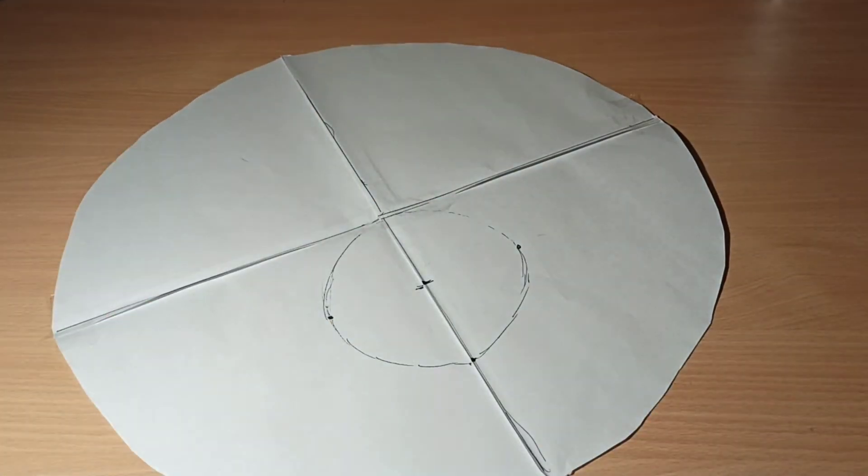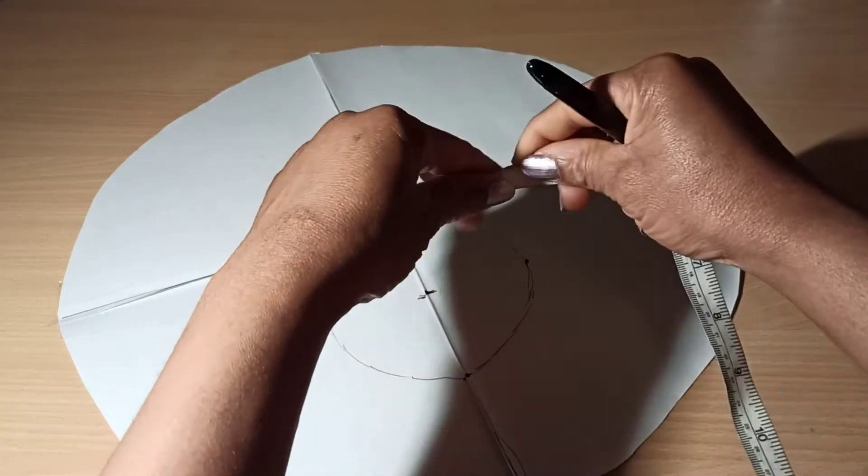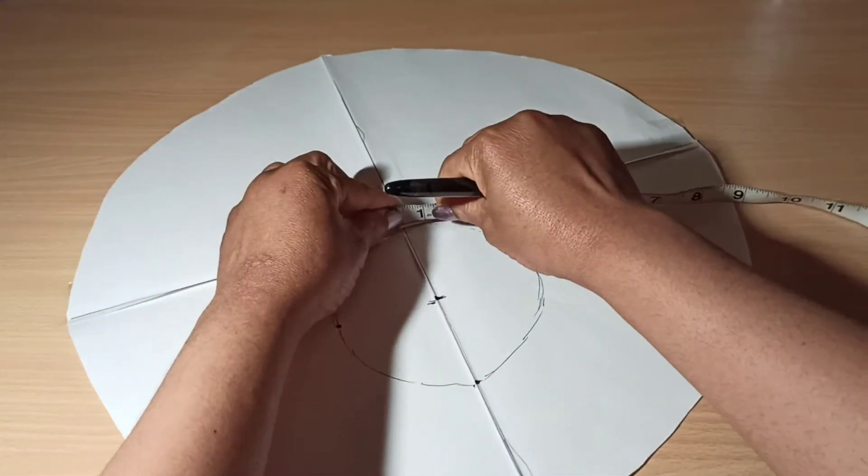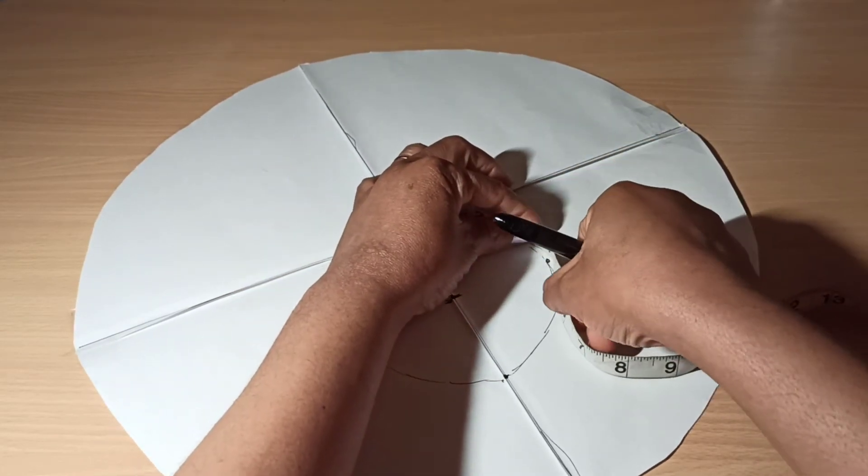Once you've done that, you want to check the arm hole if it's exactly what you want. For example, the arm hole I'm working with is 16. You want to go all the way around to see if it's 16.